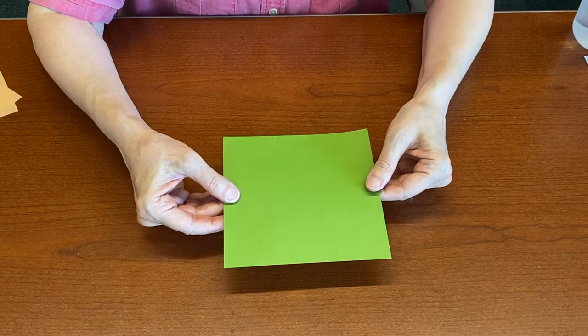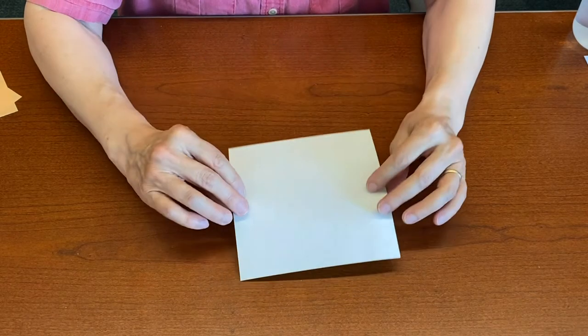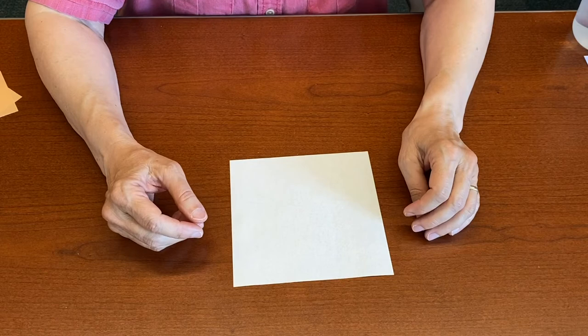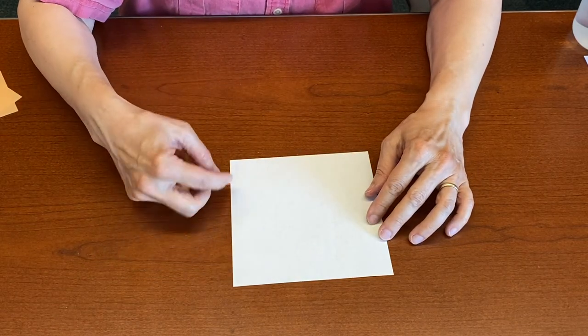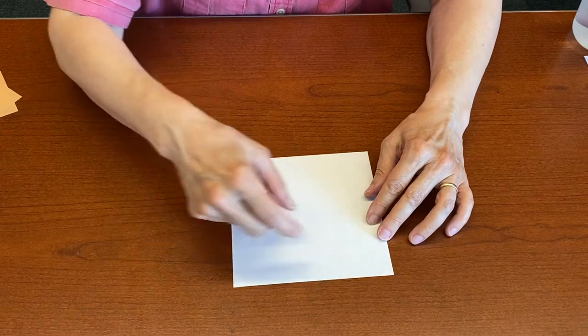I'm using a six inch square and I'm going to start with the white side face up, and I'm going to start with a diagonal fold which is made by bringing two opposite corners together.